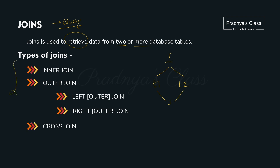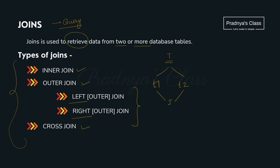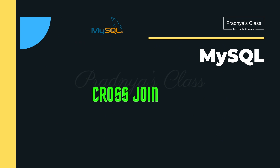Here are the different joins available in MySQL. The first one is inner join. The second one is outer join, which is categorized into two types: left and right join. The third type of join is cross join. Let's try to understand all these joins in detail.